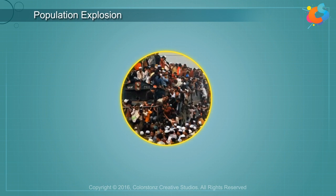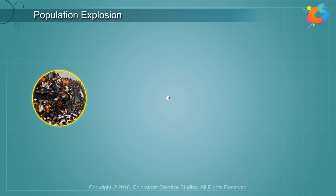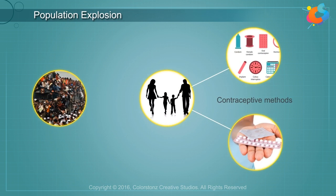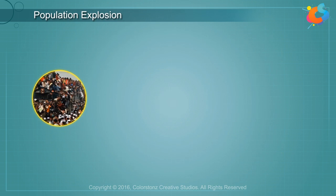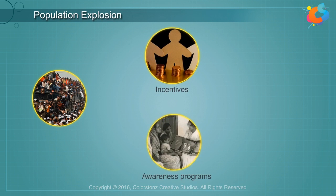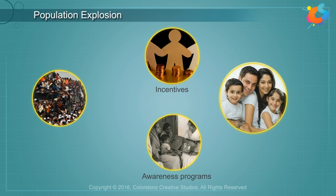The population explosion can be controlled by motivating people to have smaller families by using contraceptive methods. Government has started various programs like giving incentives to couples with small families, and awareness programs through advertisements and posters showing a very happy couple with two children.